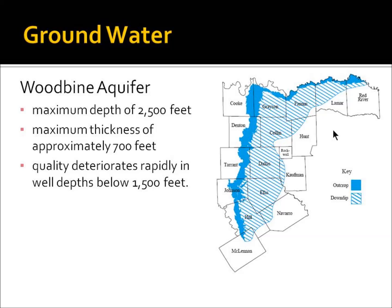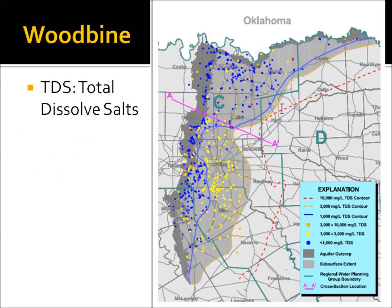Groundwater in North Texas is primarily from the Woodbine Aquifer. The Woodbine Aquifer can be very deep — up to 2,500 feet deep, with a maximum thickness of 700 feet. If you're in the down-dip part of the aquifer and your water source is available below 1,500 feet, the quality of the water deteriorates rapidly. The sodium content is so high in that region of the aquifer that it's unsuitable for irrigation purposes. This map shows the results of some sampling of wells throughout the aquifer, with orange and red dots indicating locations unsuitable for irrigation because total dissolved salts are so high.